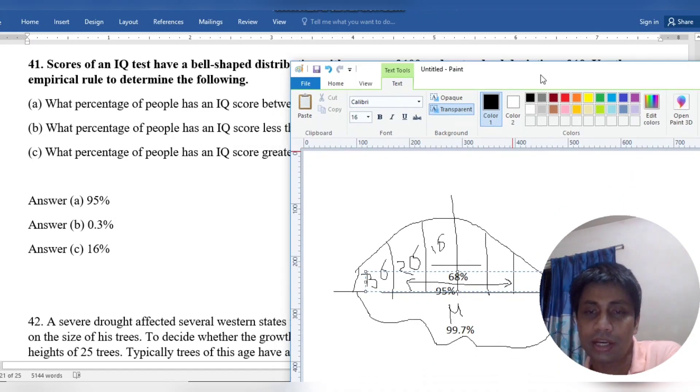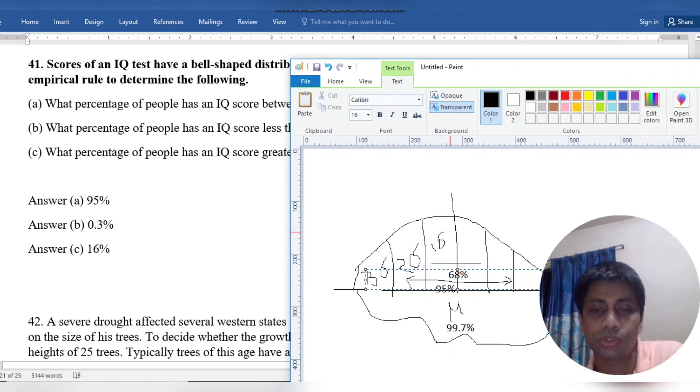So our first option falls in the two sigma limit. Then it is 95 percent.